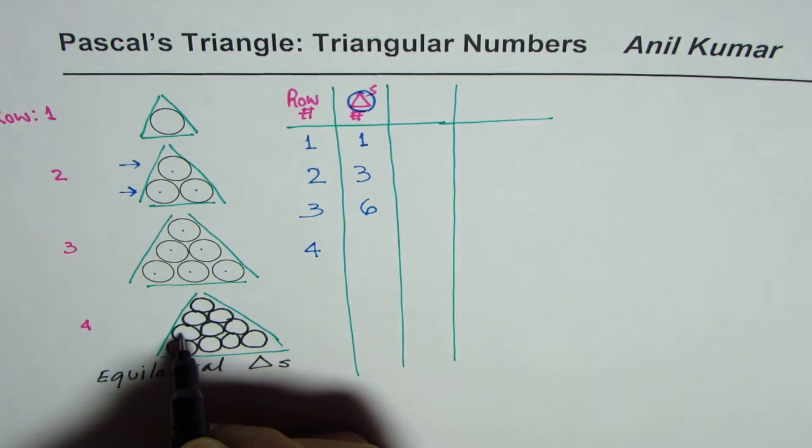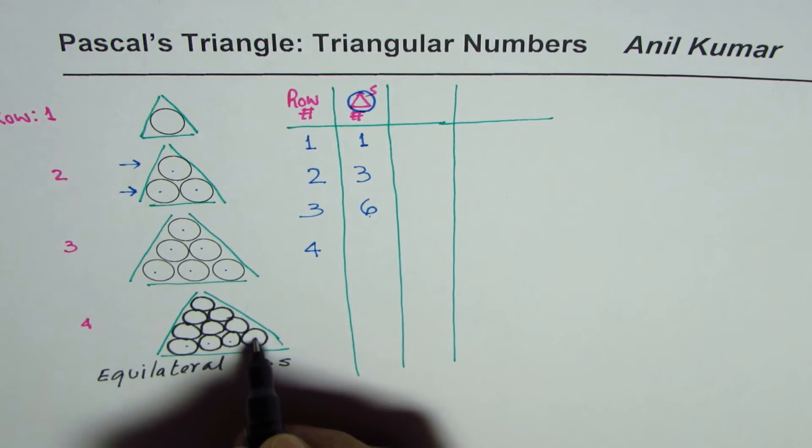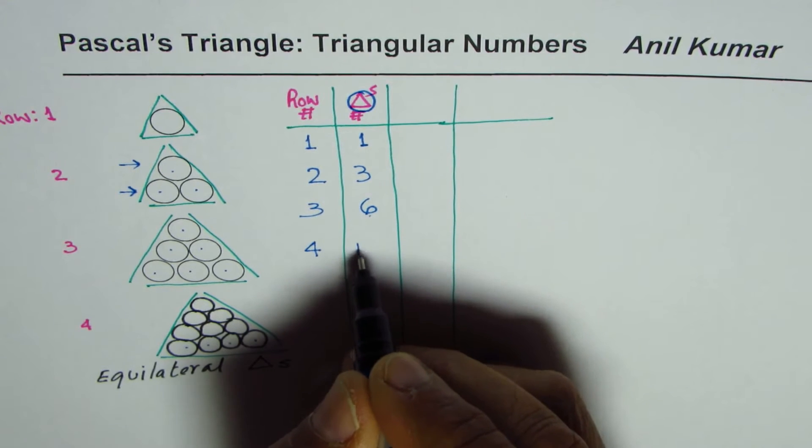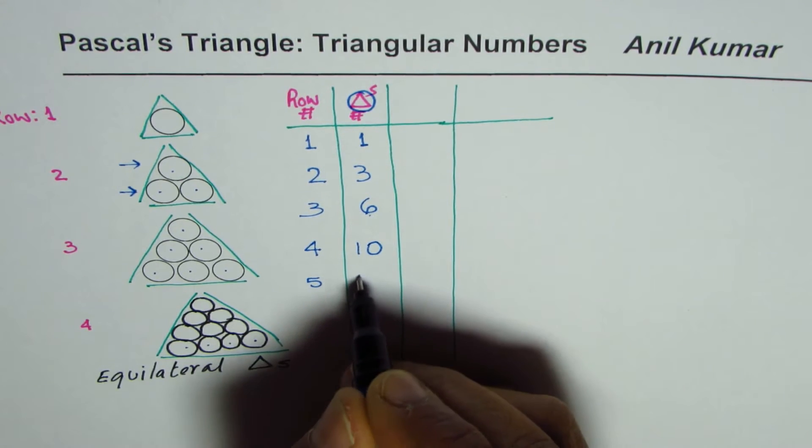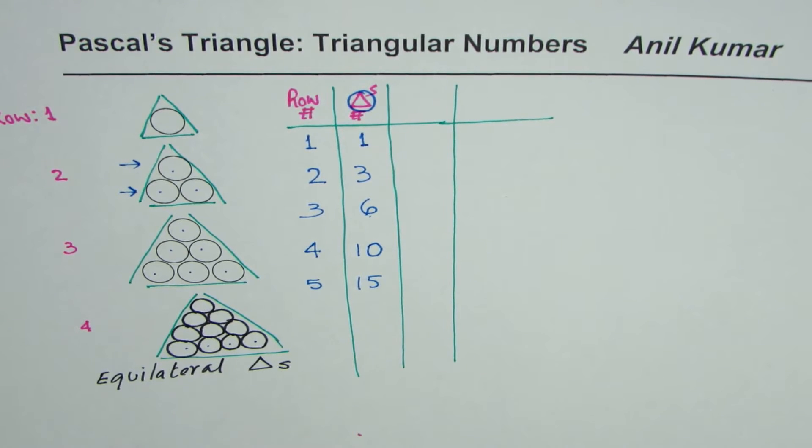Fourth row, in addition to whatever we had, it has four more. Six plus four is 10. Fifth will have five more, 15 and so on. So that is how the pattern is going to increase. So what we see here is a pattern where with every row, the number of circles increasing is same as the row number being increased. So that is the pattern which we notice.